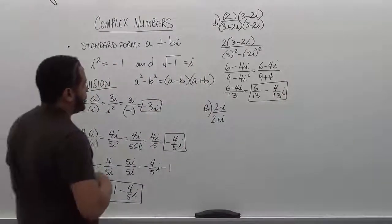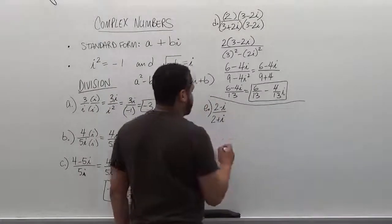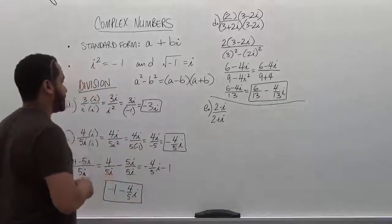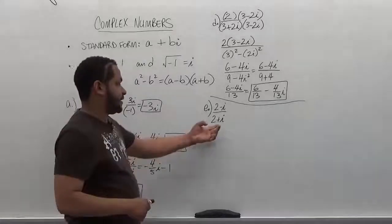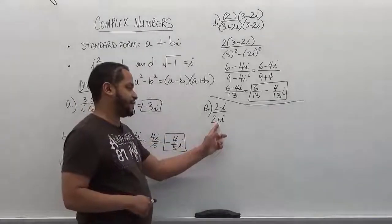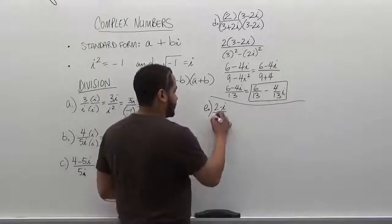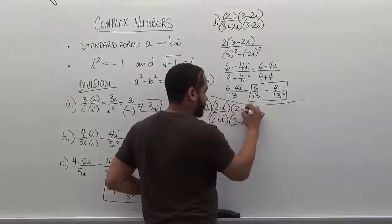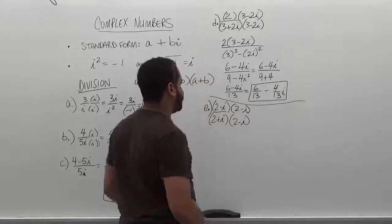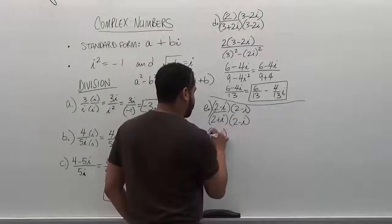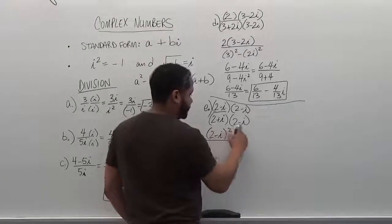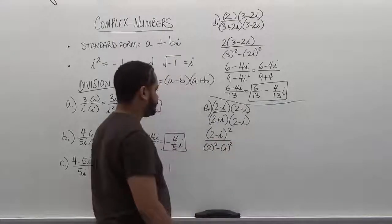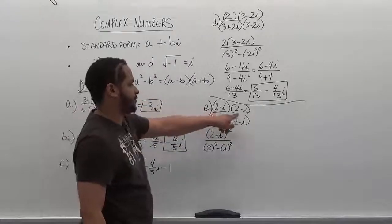Moving on to the last problem, we have 2 minus i over 2 plus i. This is very straightforward. We need to conjugate the denominator — the denominator has the positive term, so we multiply both top and bottom by 2 minus i. The top becomes 2 minus i squared over the difference of two squares, which is 2 squared minus i squared.